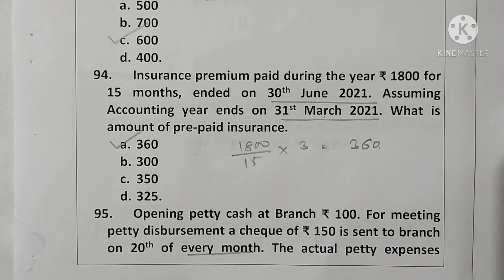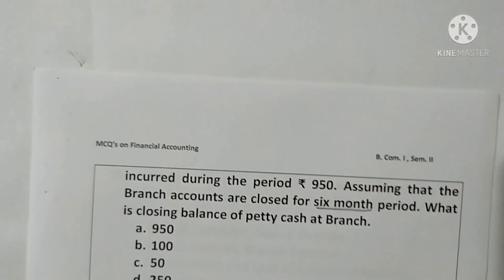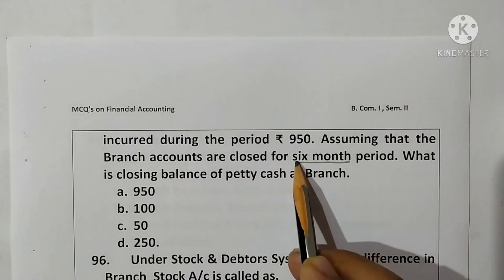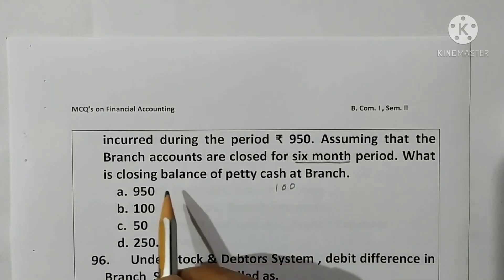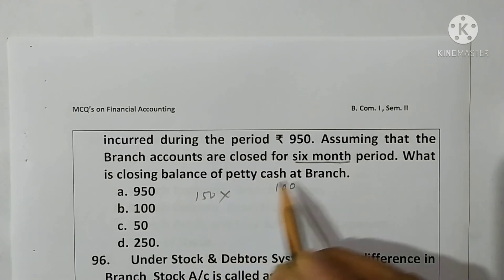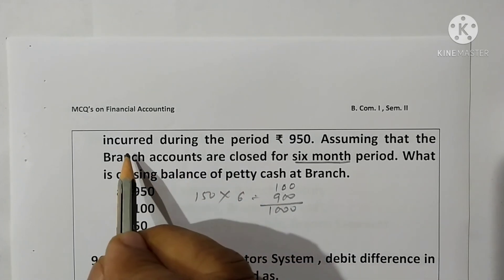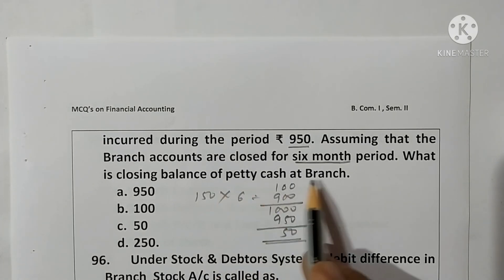Question 95: Opening petty cash rupees 100; a cheque of rupees 150 is sent to branch on the 20th of every month. Actual petty expenses for a six-month period are rupees 950. Monthly payment for six months is rupees 900; total cash is rupees 1000. Subtract expenses of 950, and the closing balance is rupees 50. Option C is correct.